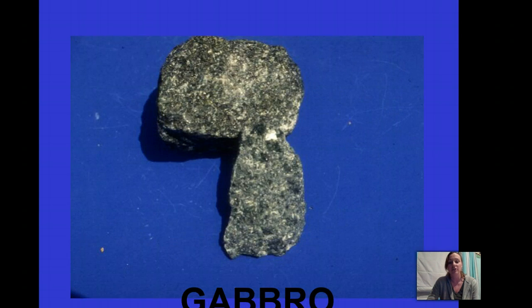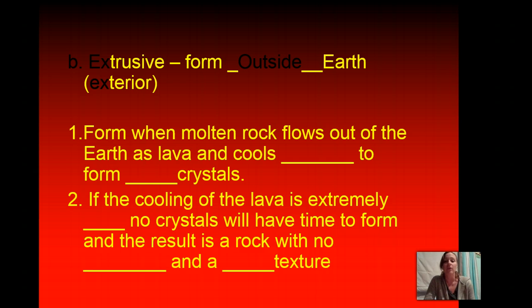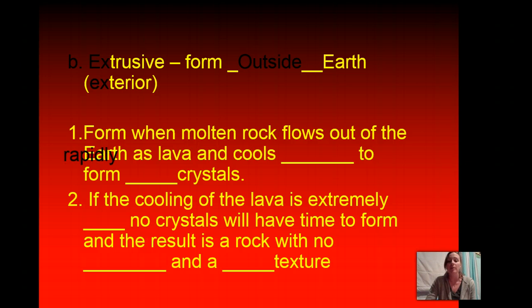Here's another picture of Gabbro that has large crystals. We also have lava hardening outside of the earth, and these igneous rocks are known as extrusive — they form outside of the earth or on the earth's exterior. We've highlighted the 'EX' in both words to help you remember. Extrusive rocks form when molten rock flows out of the earth as lava and cools rapidly to form fine crystals.